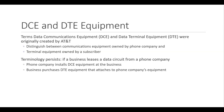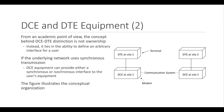Data Terminal Equipment (DTE) is any equipment that is either a source or destination for digital data. DTE devices do not generally communicate directly with each other — they must use DCE to carry out communication, and DTE does not need to know how data is sent or received, as those details are left to the DCE. A typical example of DTE is a computer; other examples include printers, file and application servers, and other PCs. From an academic standpoint, the concept behind the DCE/DTE distinction is not ownership but the ability to define an arbitrary interface for a user. If the underlying network uses synchronous transmission, the DCE equipment can provide either a synchronous or asynchronous interface to the user's equipment.